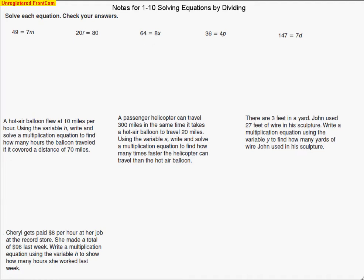Today we will be solving equations by dividing. Let's take a look at our directions - solve each equation, then check our answers. Here's the type of problem that we've got: 49 equals 7m. When 7 and m are right next to each other, this means to multiply. We're going to multiply 7 by m, and it's going to end up equaling 49.